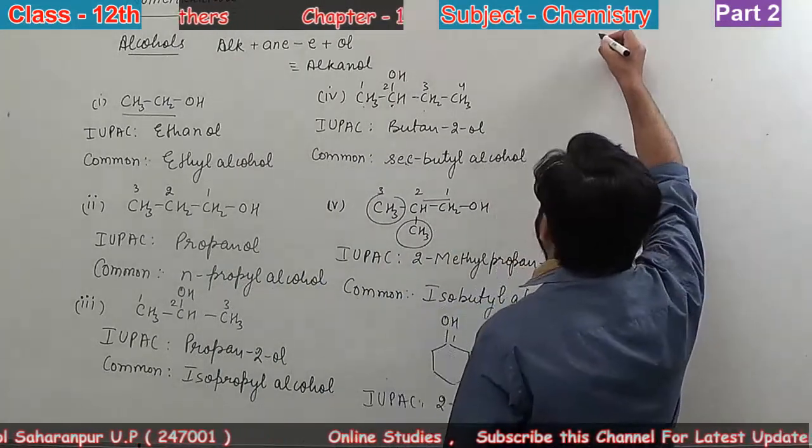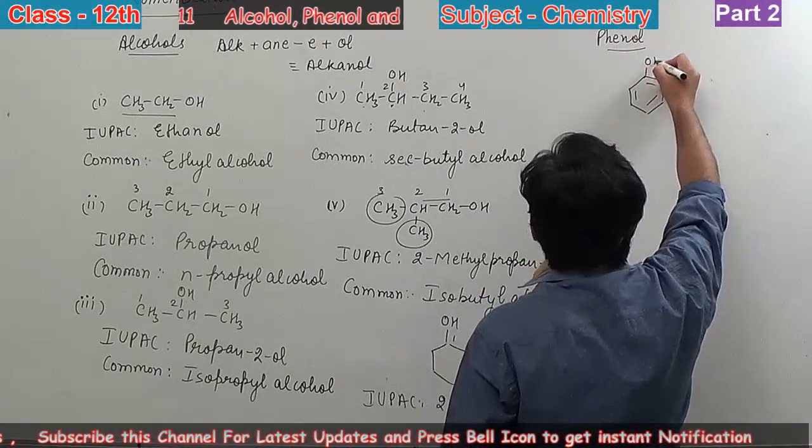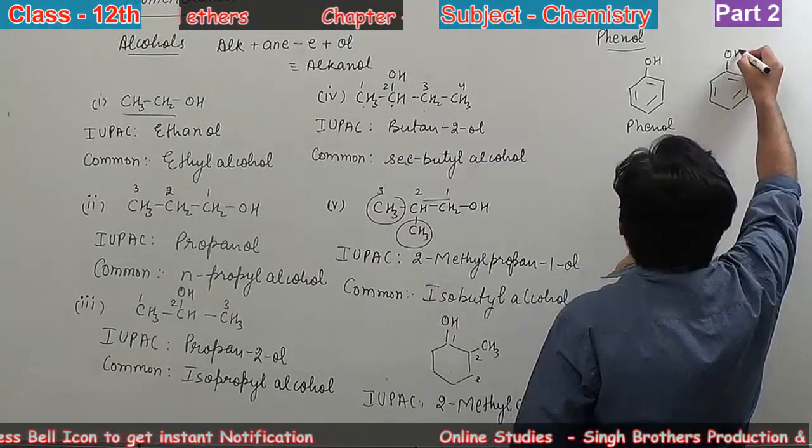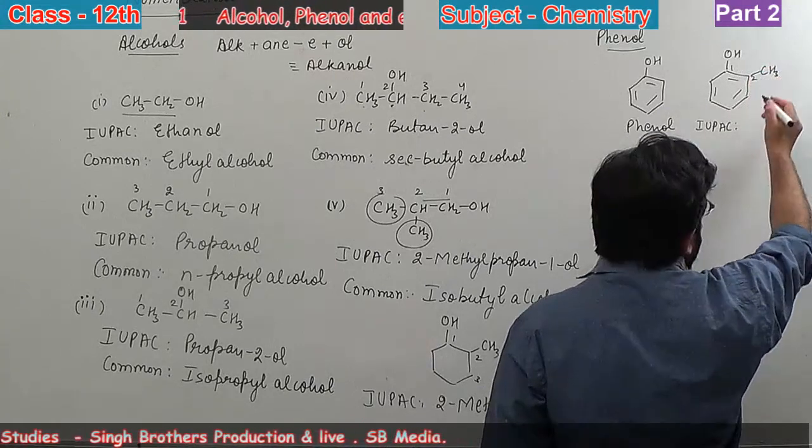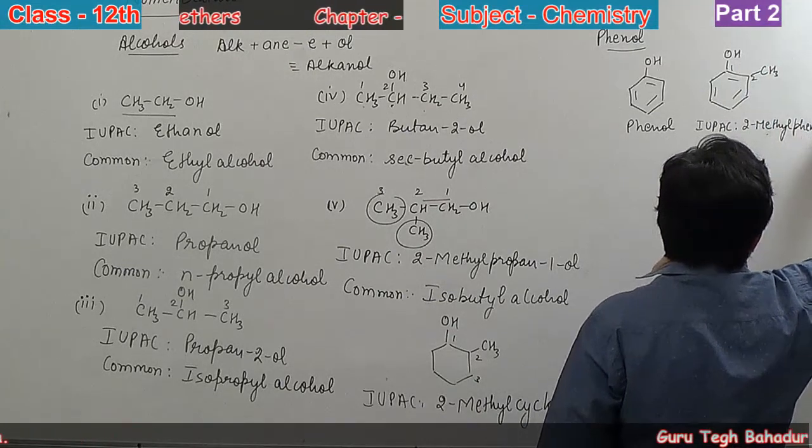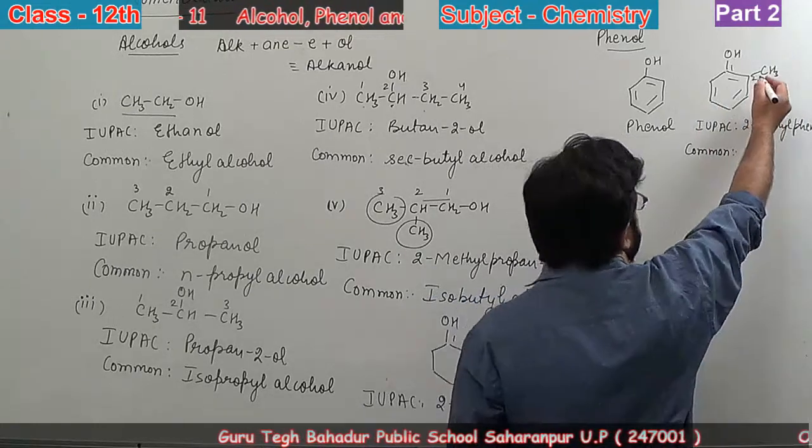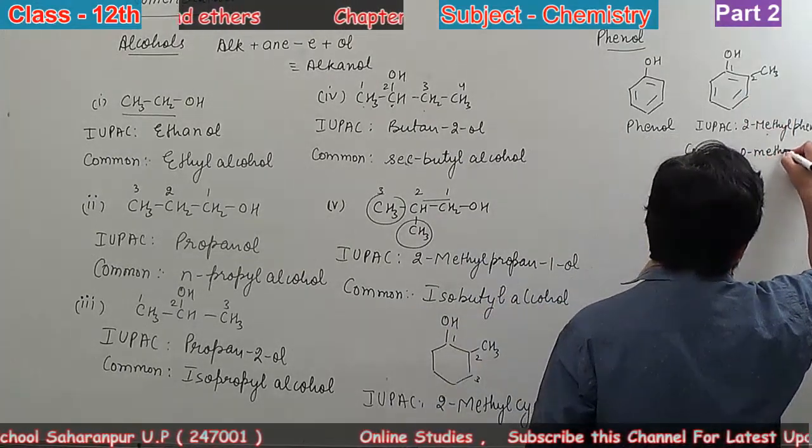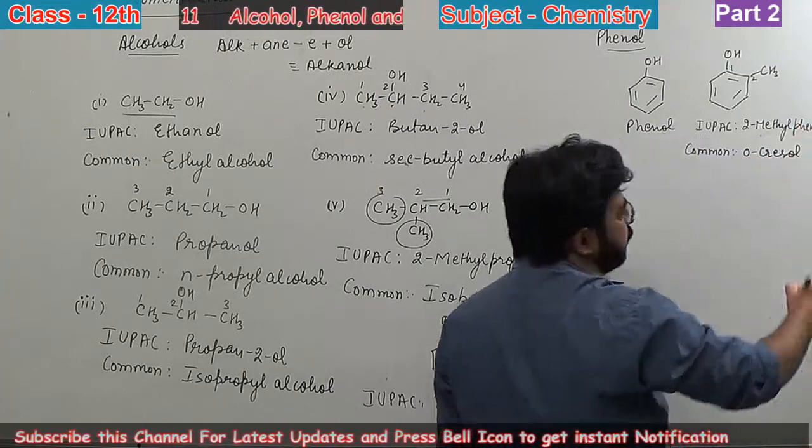Now we will write phenol names. Normally, benzene with OH is basically phenol. If you add an alkyl group, suppose a methyl group here. In phenol there are ortho, meta, para positions. This is the ortho position. Methyl group at two, so 2-methylphenol. Or simply, the common name is ortho-cresol.